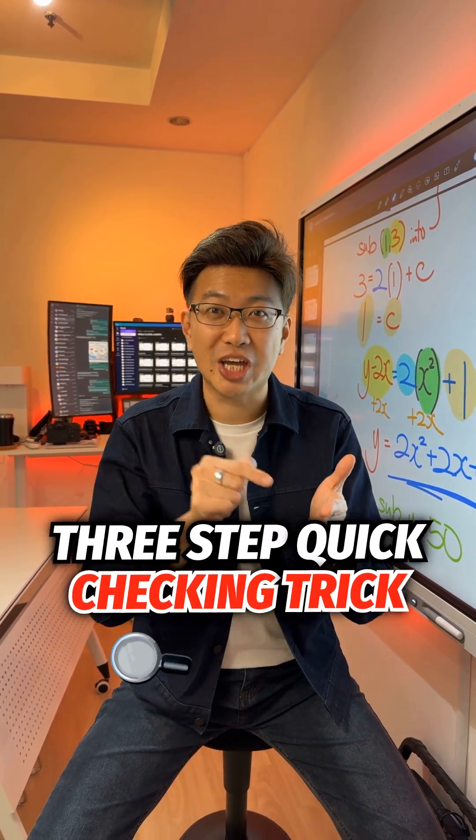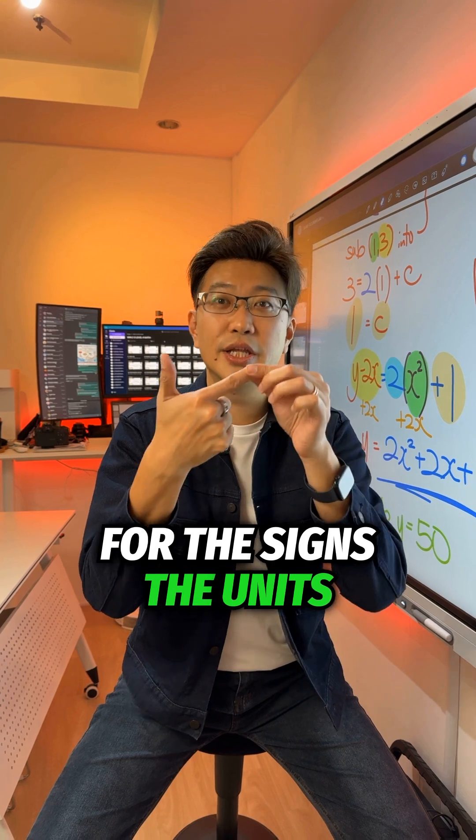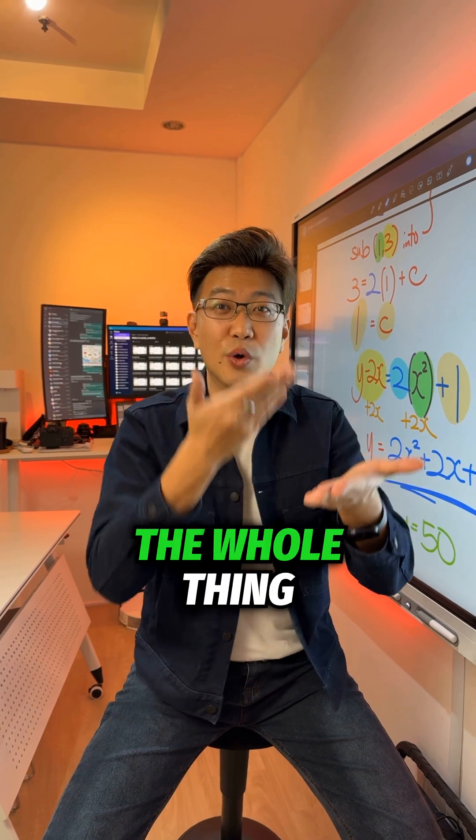Now, the three-step quick checking trick. Number one, scan for careless mistakes. Look out for the signs, the units, or even copying errors. If you copied numbers wrongly, no need to redo the whole thing.